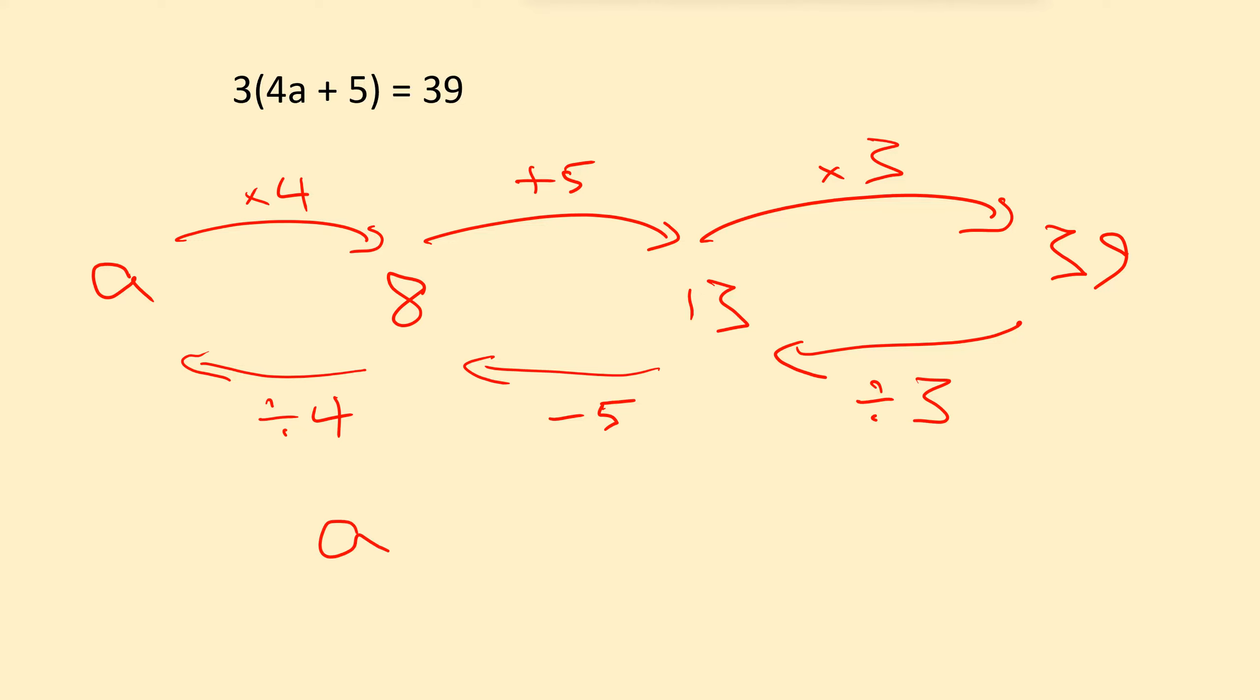Which means, of course, that a is equal to 2. We have solved for a by backtracking. Let's do one more quick example.